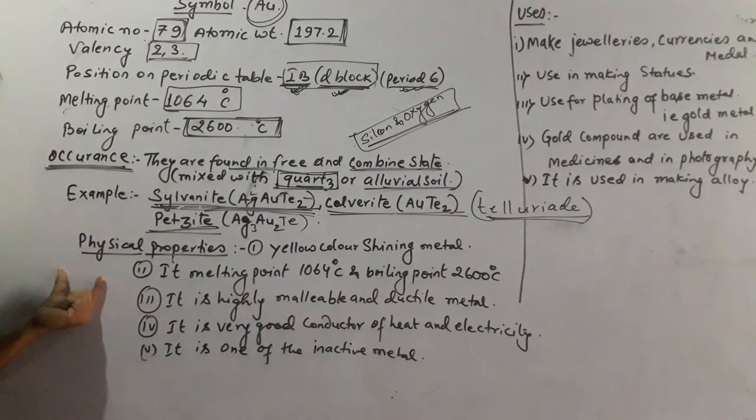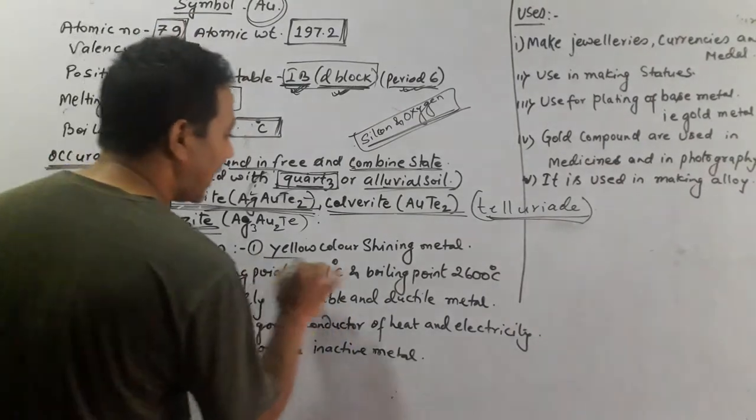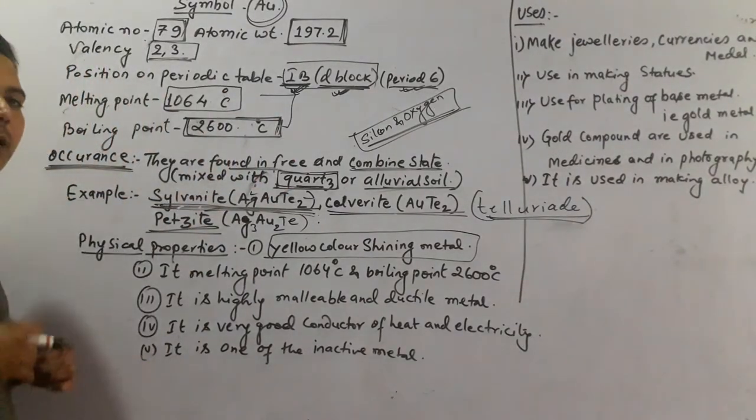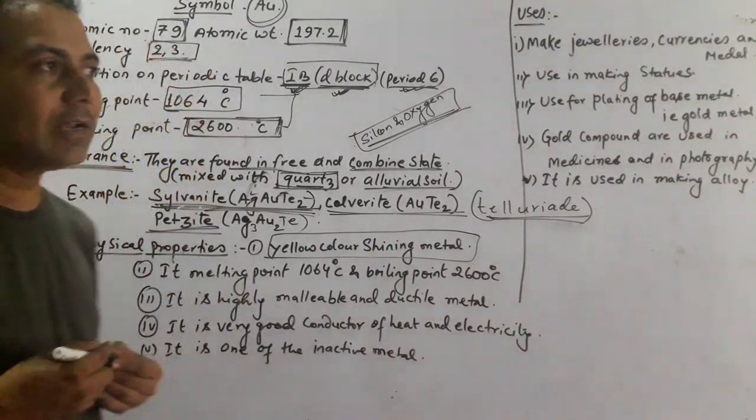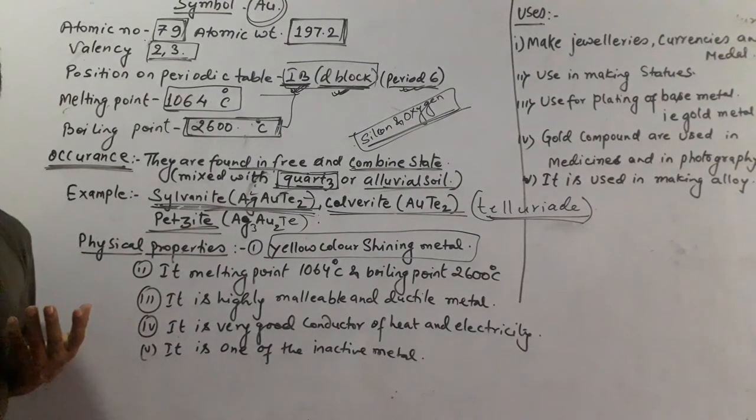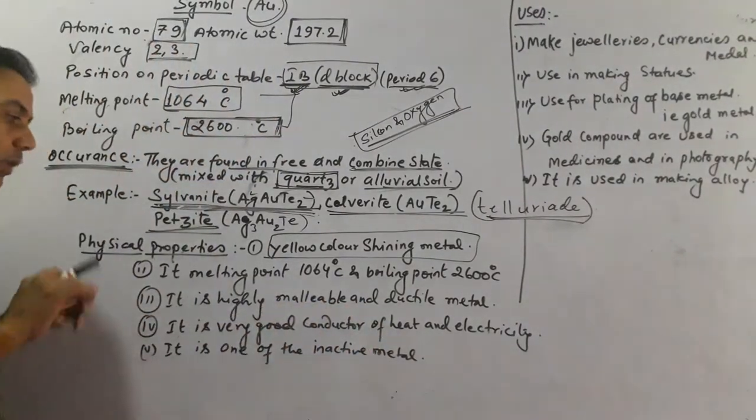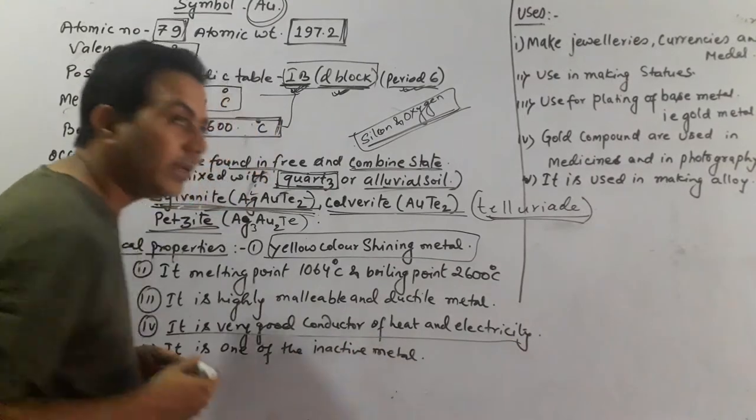Now comes the physical properties. The physical properties of gold: it is yellow color shining metal. Its melting point is 1064 degrees Celsius and boiling point is 2600 degrees Celsius. It is highly malleable and ductile metal, meaning they can make thin plates or thin wires and they are shining without breaking.